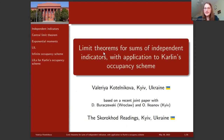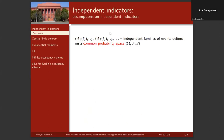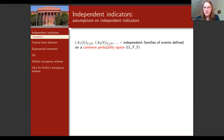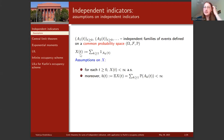This talk is based on joint work with my supervisor Alexander Iksanov from Kyiv. We start from assumptions on independent indicators. We denote by A1, A2, and so on independent families of events which live on a common probability space. We consider the process X which equals the sum of indicators of events A_k.